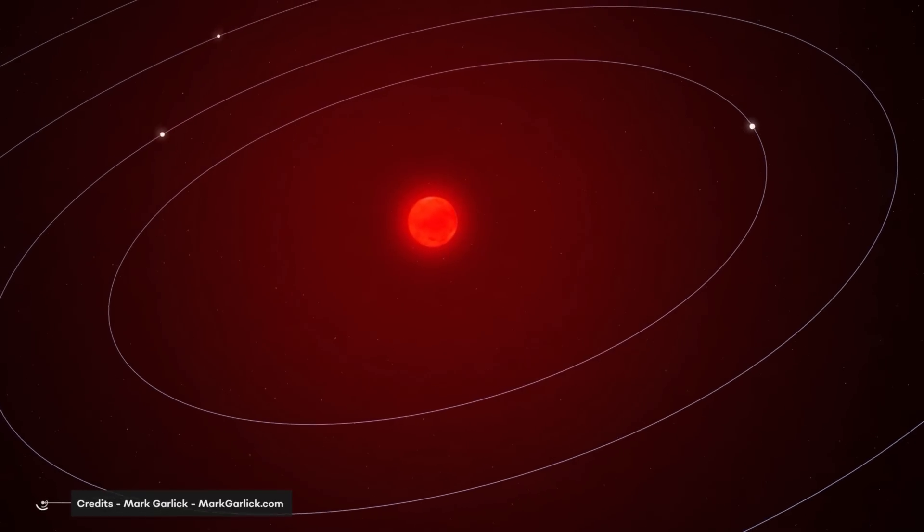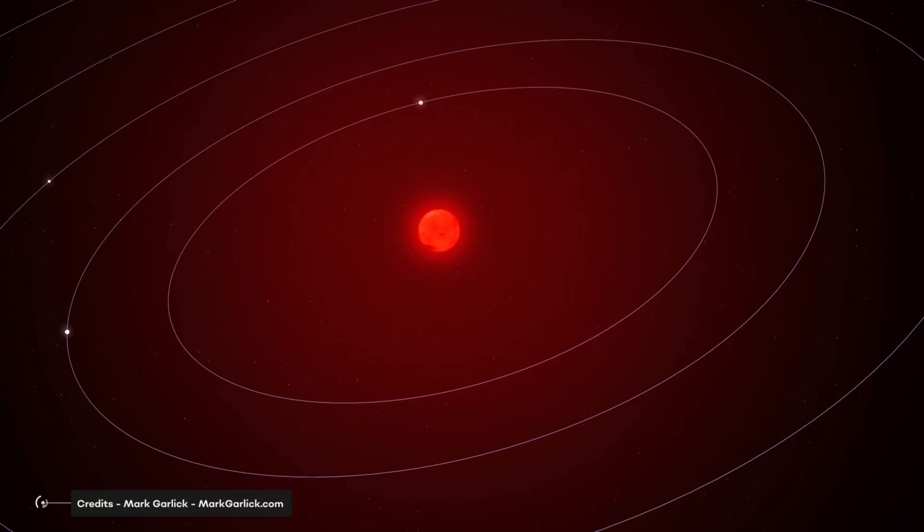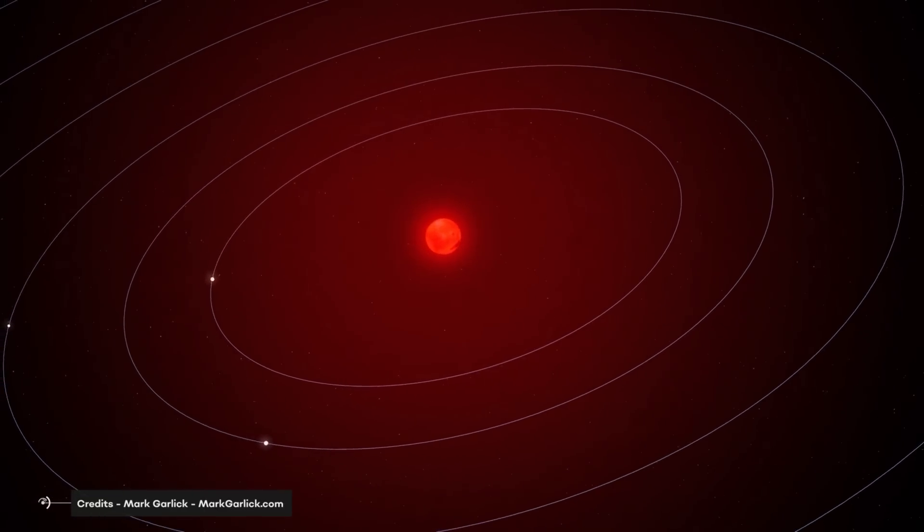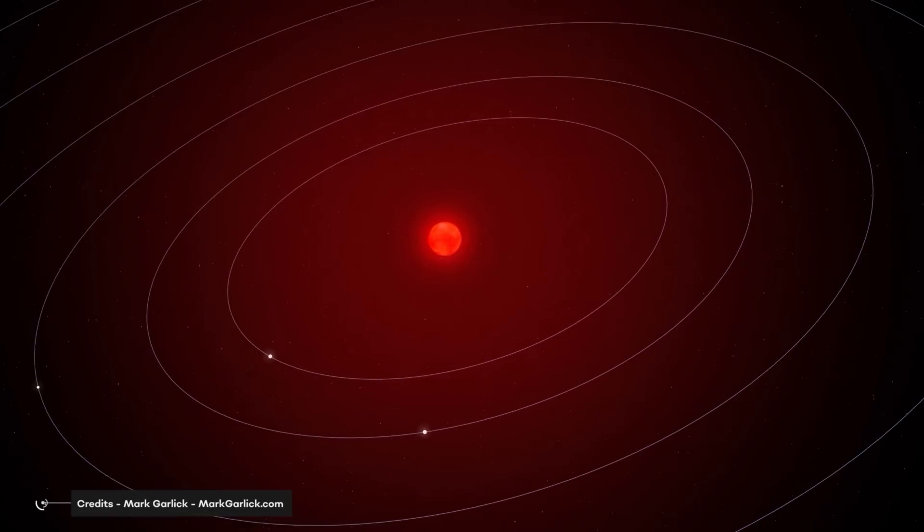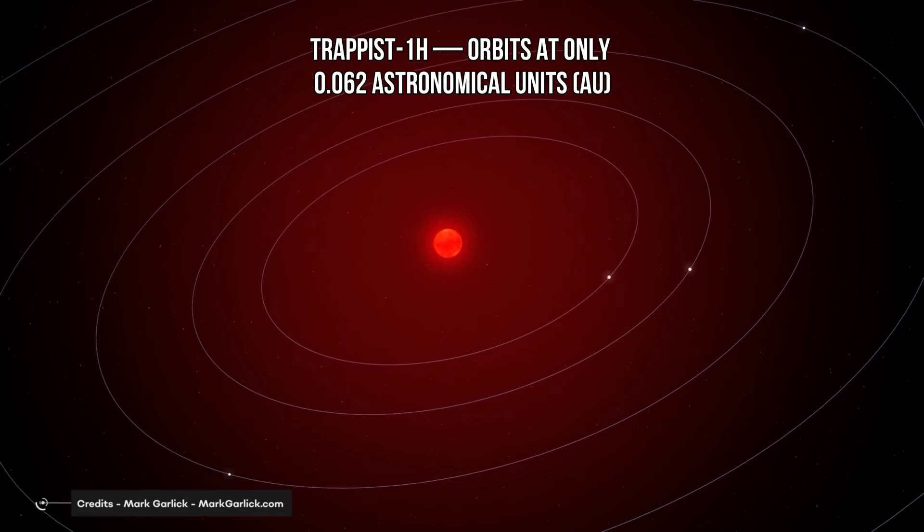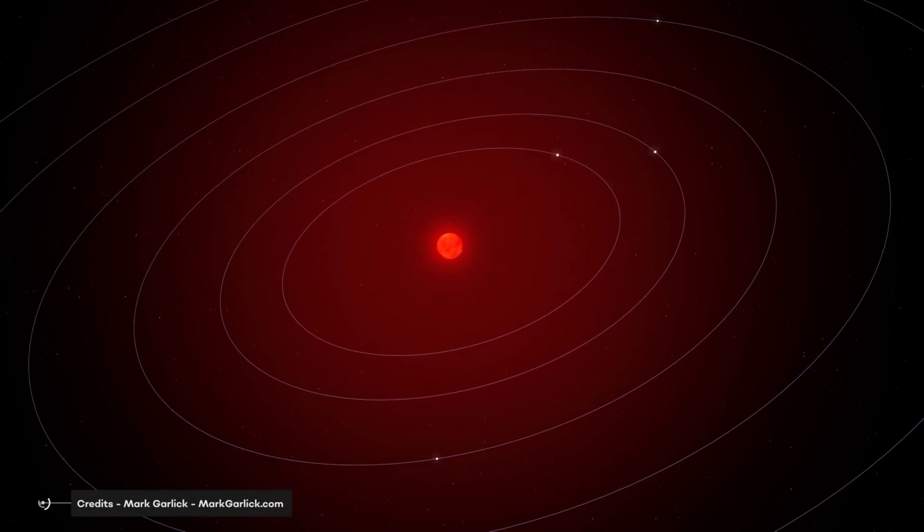However, what makes TRAPPIST so interesting is not the number of present exoplanets, but rather some of their qualities. All seven TRAPPIST planets orbit their host very closely. Even the most distant TRAPPIST-1h orbits at only 0.062 astronomical units, six times closer than Mercury is to the Sun.